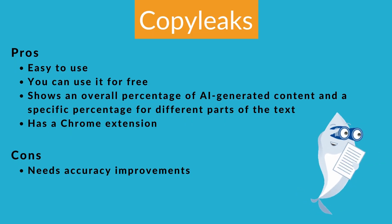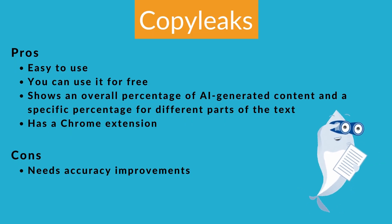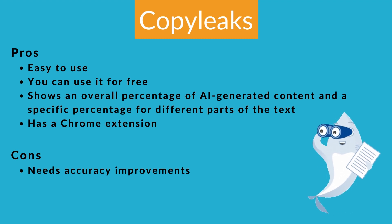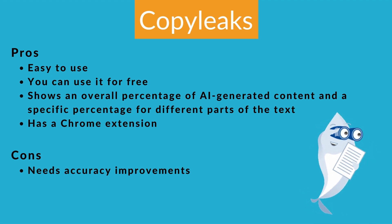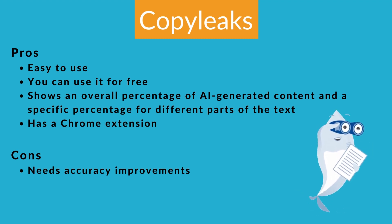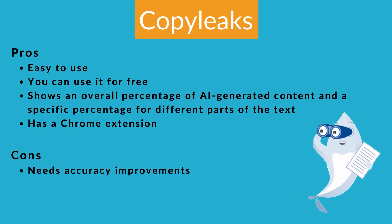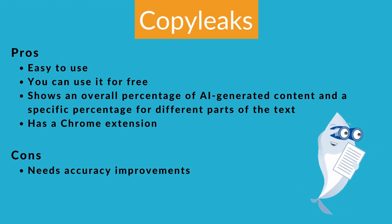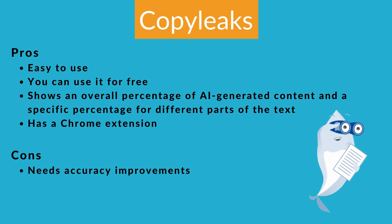Pros: Easy to use. You can use it for free. Shows an overall percentage of AI-generated content and a specific percentage for different parts of the text. Has a Chrome extension. Cons: Needs accuracy improvements.